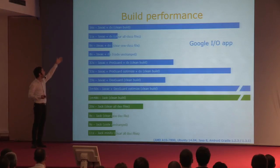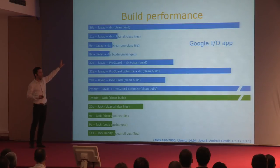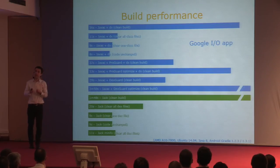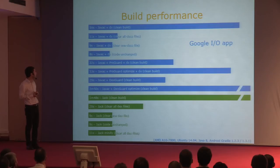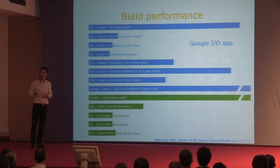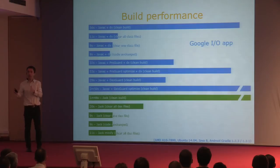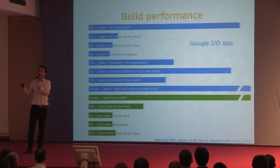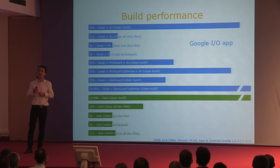But if you do incremental builds, only changing one or a few files, that already improves a lot, thanks to the caching that the build process performs inside. Now, if you insert ProGuard in that build process, a clean build is actually faster. And that's a bit counterintuitive, because there is additional processing going on in that build process.